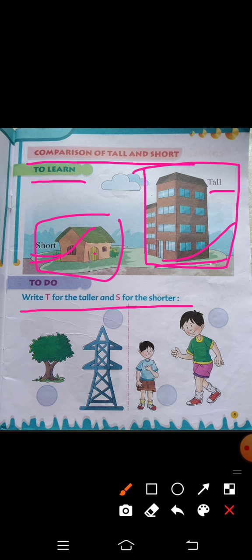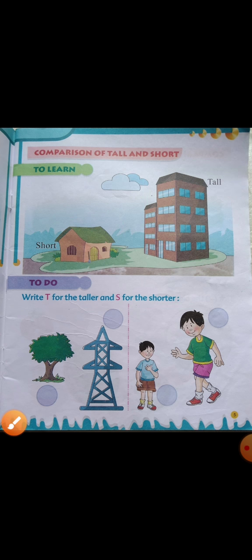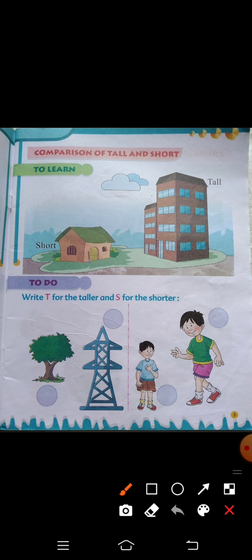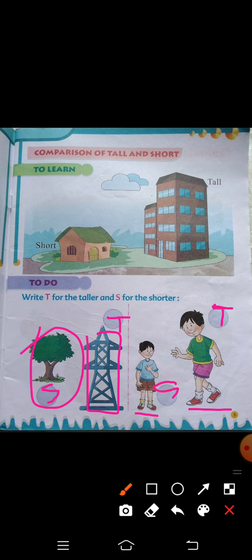We have to write T for the taller and S for the shorter. So we'll write here — we'll write T for the taller one and S for the shorter one. All of our children will be able to fill in the book and learn it well.